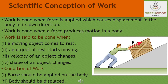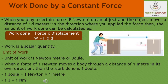First, a moving object comes to rest — when you catch a ball, a force is required to stop it, so work is done. Second, when an object at rest starts moving — when you kick a ball placed on the ground, it starts moving, so work is done. Third, the velocity or speed of an object changes — if an object moving slowly speeds up after a force is applied, work is done. Fourth, the shape of an object changes. These four things tell us that work is said to be done.